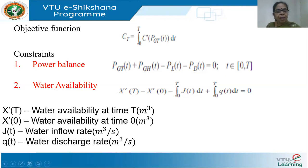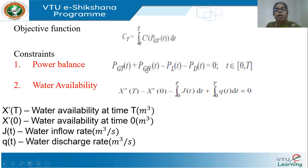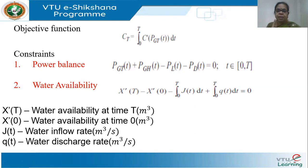The first constraint is power balance, which must always be met. At any time instant t, the thermal generation PGT plus the hydel generation PGH, minus the losses, minus the demand equals zero — which means generation equals total demand plus losses. This is your power flow equation.